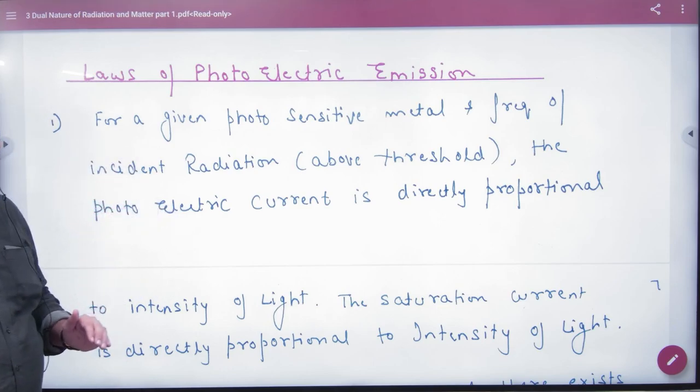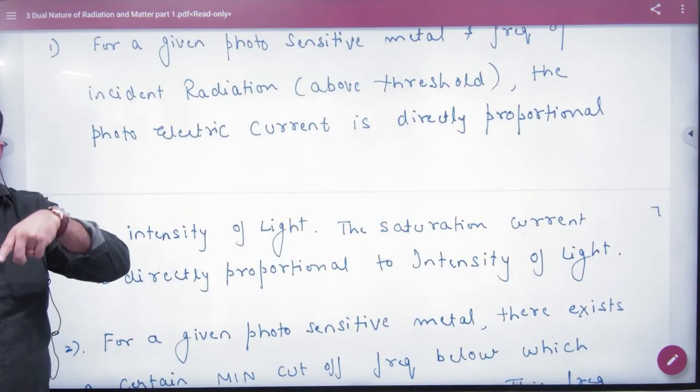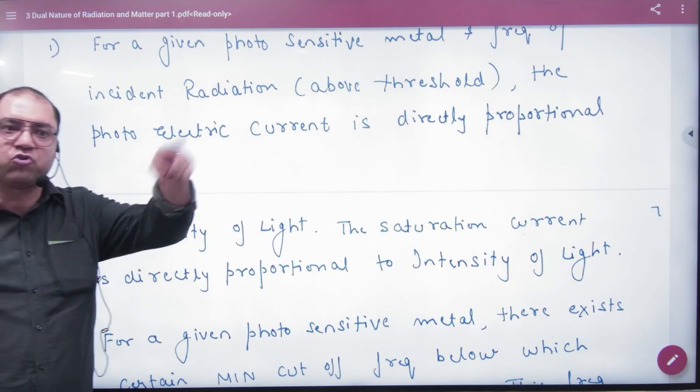The photoelectric current is directly proportional to intensity. Photoelectric current and intensity are directly proportional - you have a straight line relationship.